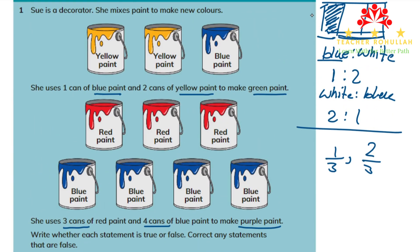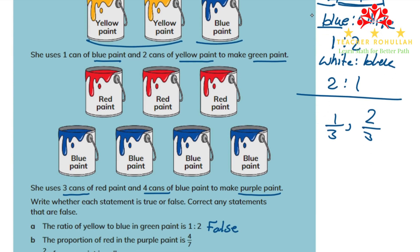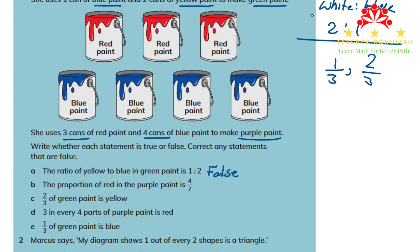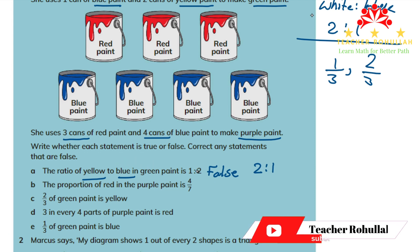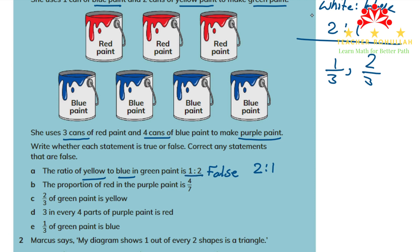It is false because we have two yellow and one blue. We have three cans of paint for the green color, two of which are yellow and one is blue. So the ratio for the green color is two to one. We have to keep in mind the order of the ratio — if it says yellow to blue, we write yellow first. If we say blue to yellow, we write one to two. But here the correct answer is two to one.